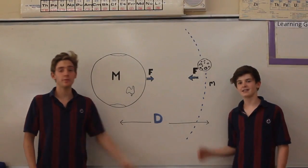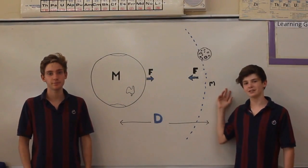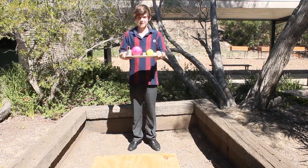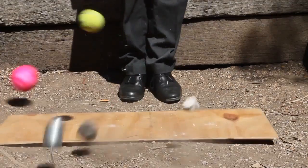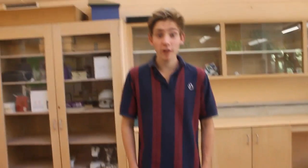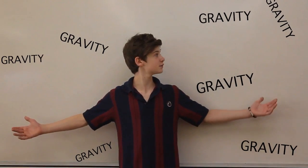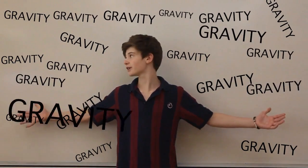Gravity keeps our moon in orbit instead of shooting off into space. It causes different masses to fall at the same rate. Gravity causes weight — and that can't go away because gravity fills the whole universe.